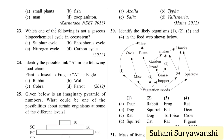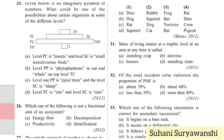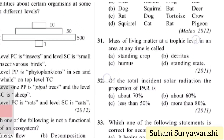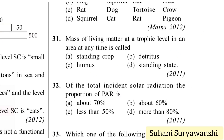The mass of living matter at a trophic level in an area at any time is called standing crop. Answer is standing crop.